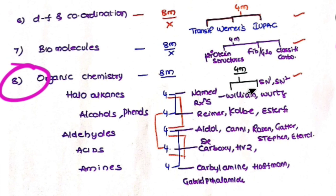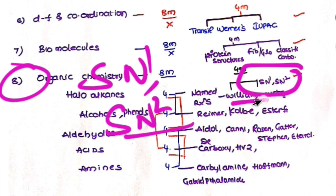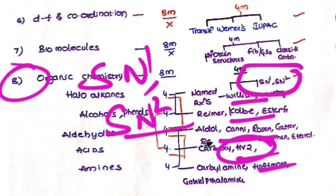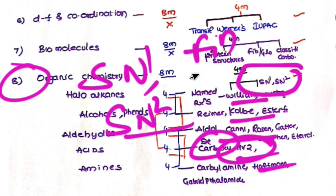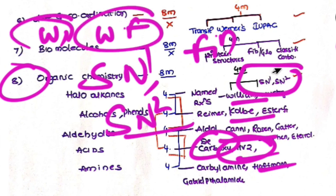In organic chemistry, along with 8 marks, SN1 and SN2 is a very very important 4 marks question. Also individual 4 marks questions include HVZ reaction, decarboxylation reaction, Finkelstein reaction, Swart reaction, and Wurtz reaction - all these are frequently appearing 4 marks questions in organic chemistry.